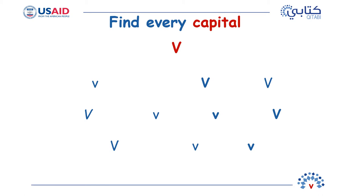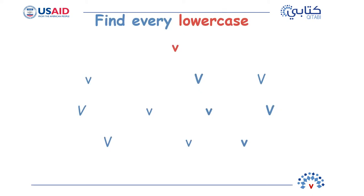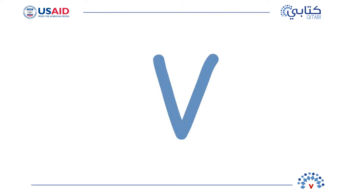Do you see all the letters? Can you find all of the big Vs? Tap or point to all of the capital Vs with your finger and say V, V, V. Did you find all of the capital Vs? Now find all the lowercase Vs — tap them and say V, V, V when you find each one. The lowercase Vs are in red. Good job! Look at the letter V. Remember how it looks. We will now look for the capital Vs and try to find them in words.